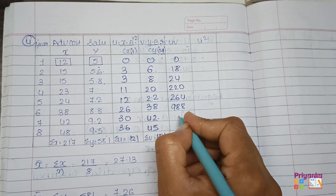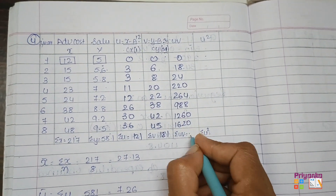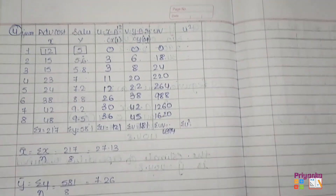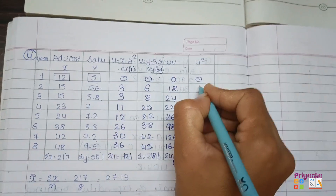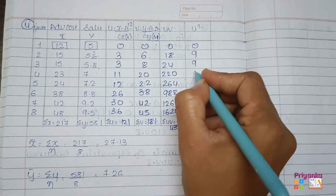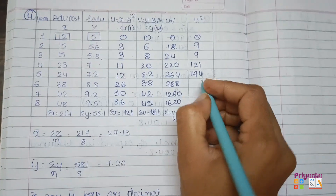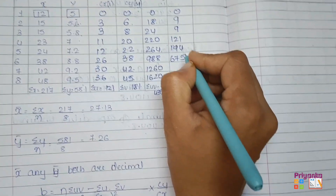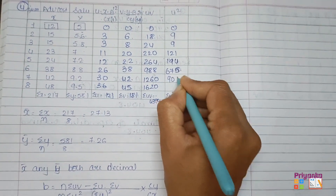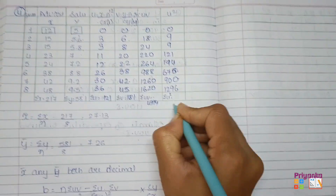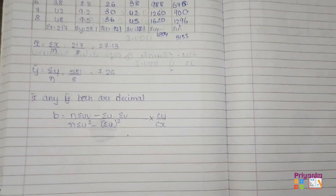You can do all of this directly on your calculator. The total of the UV column is 4394. Next, compute U² — that is the square of the U column: 0²=0, 3²=9, 3²=9, 11²=121, 12²=144, 26²=676, and so on. The total of the U² column is 3155.